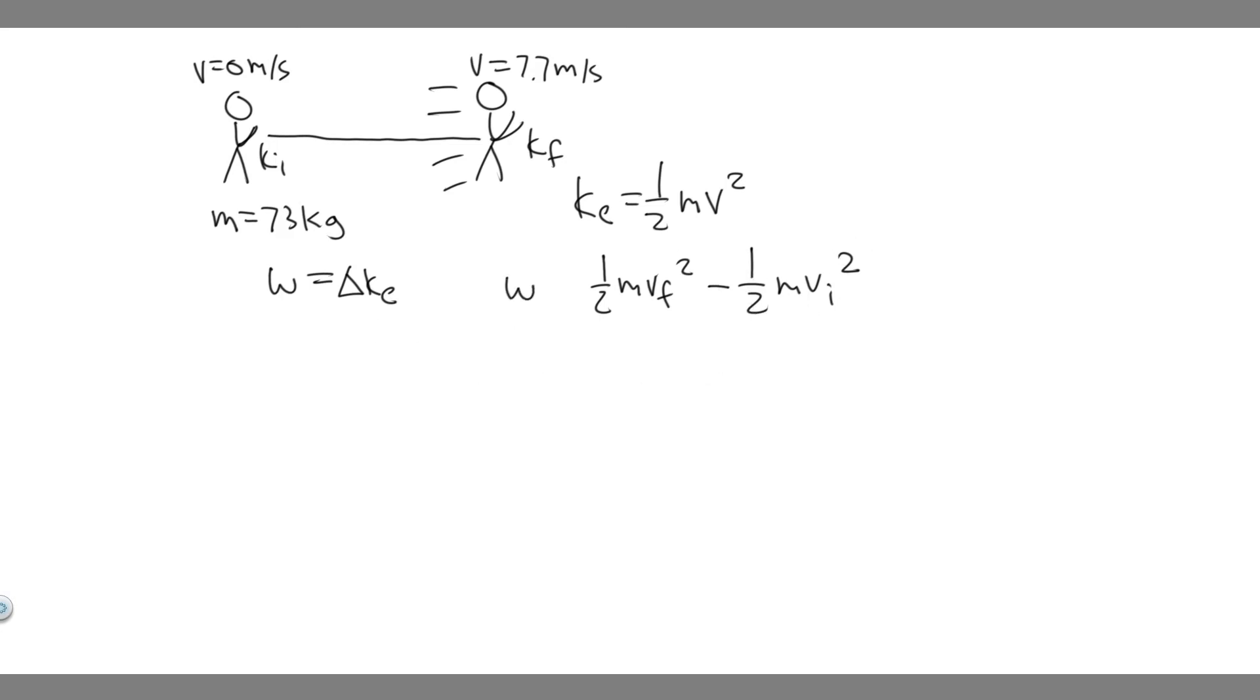So what we want to do is calculate this. The work is going to be equal to 1/2 times the mass, which is 73, times the final velocity. In this case the final velocity is 7.7.